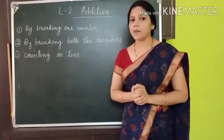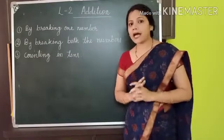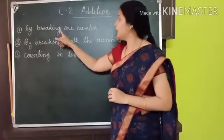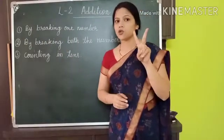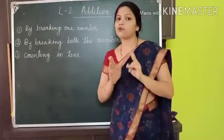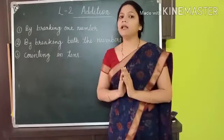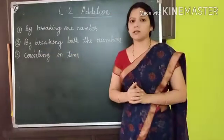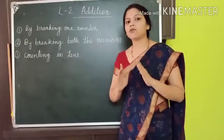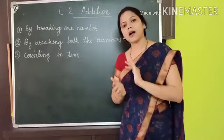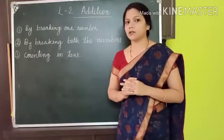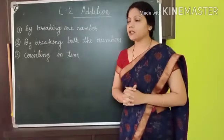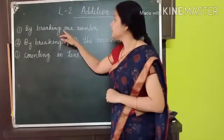In this chapter, first we will learn to add two numbers by three different ways. First is by breaking one number. The second part is by breaking both the numbers — we have to break both the numbers and after that combine them. And the third way is counting in tens. So, let us start with the first way, that is breaking one number.